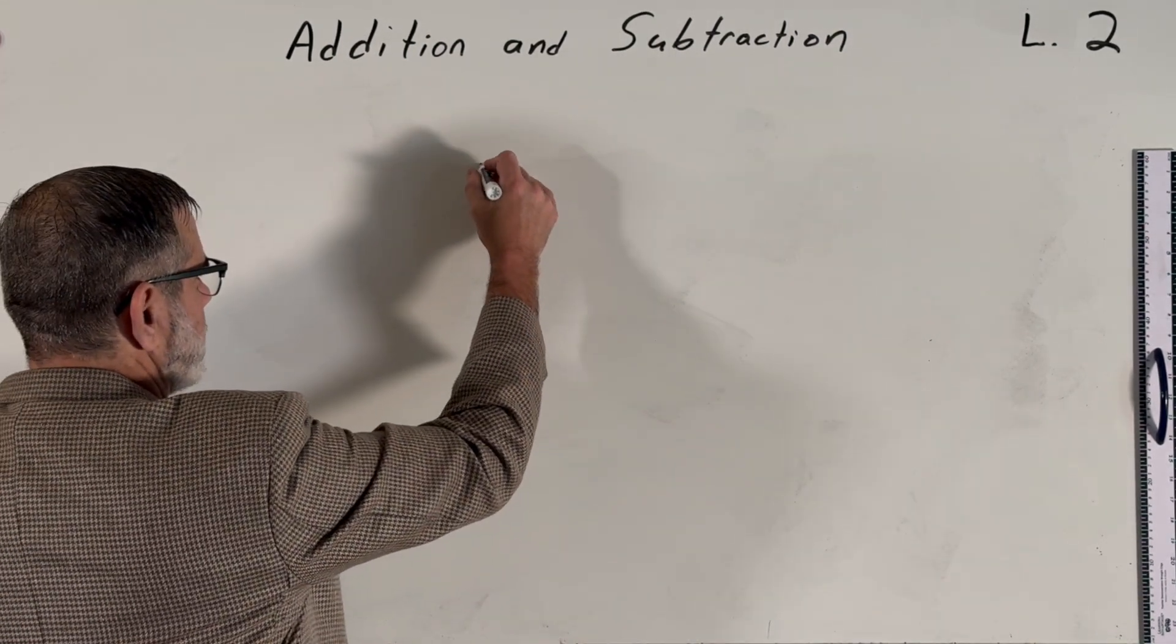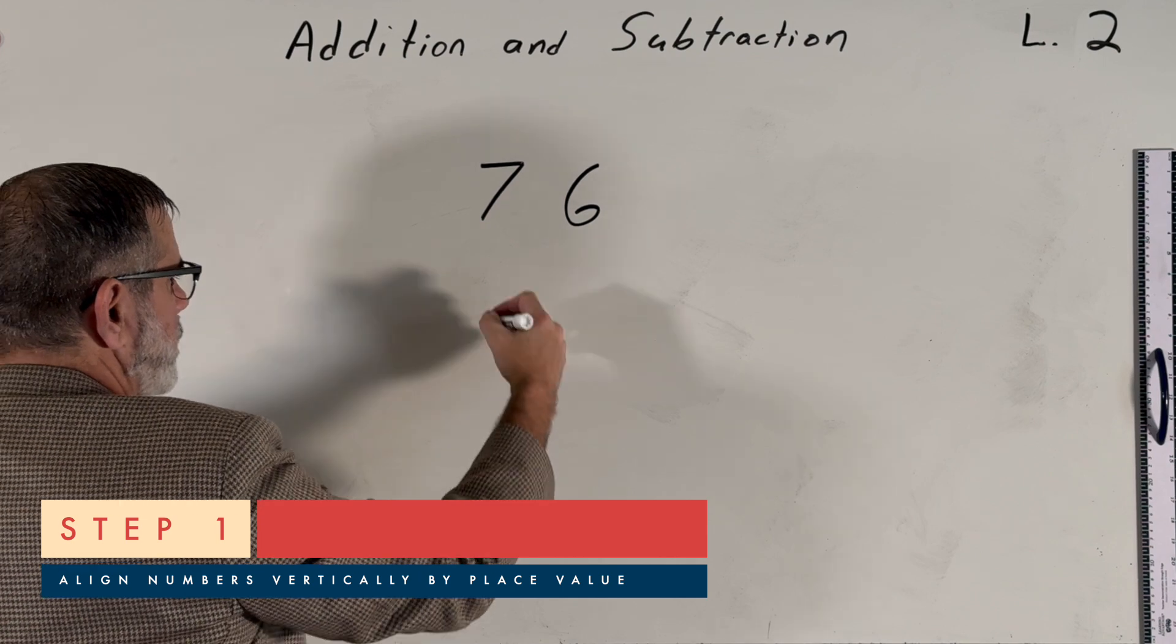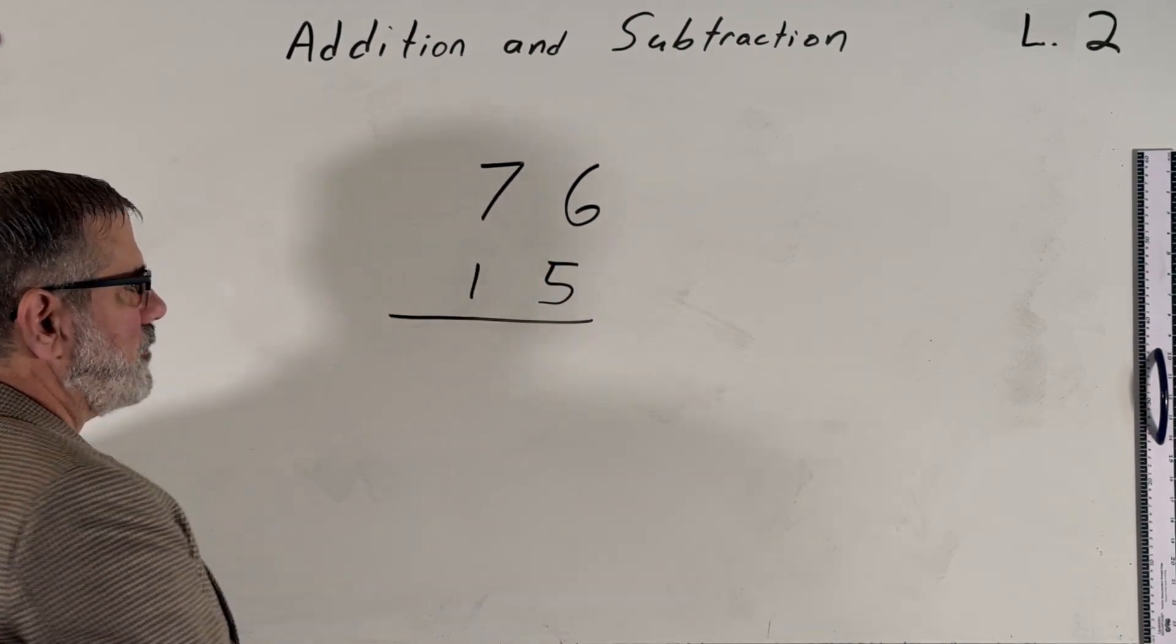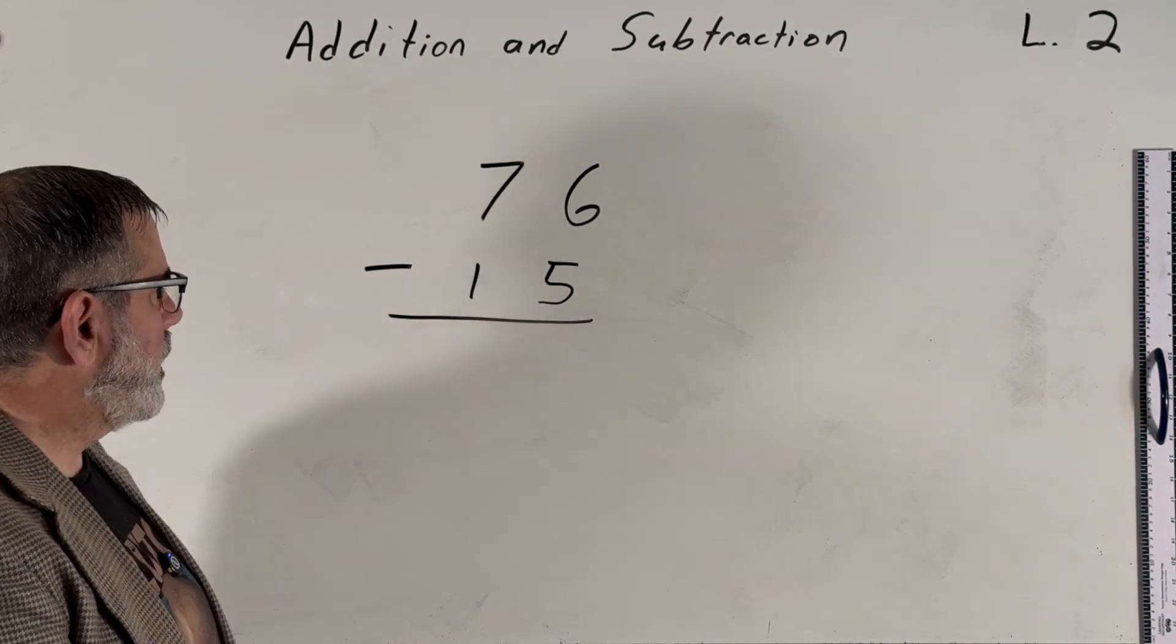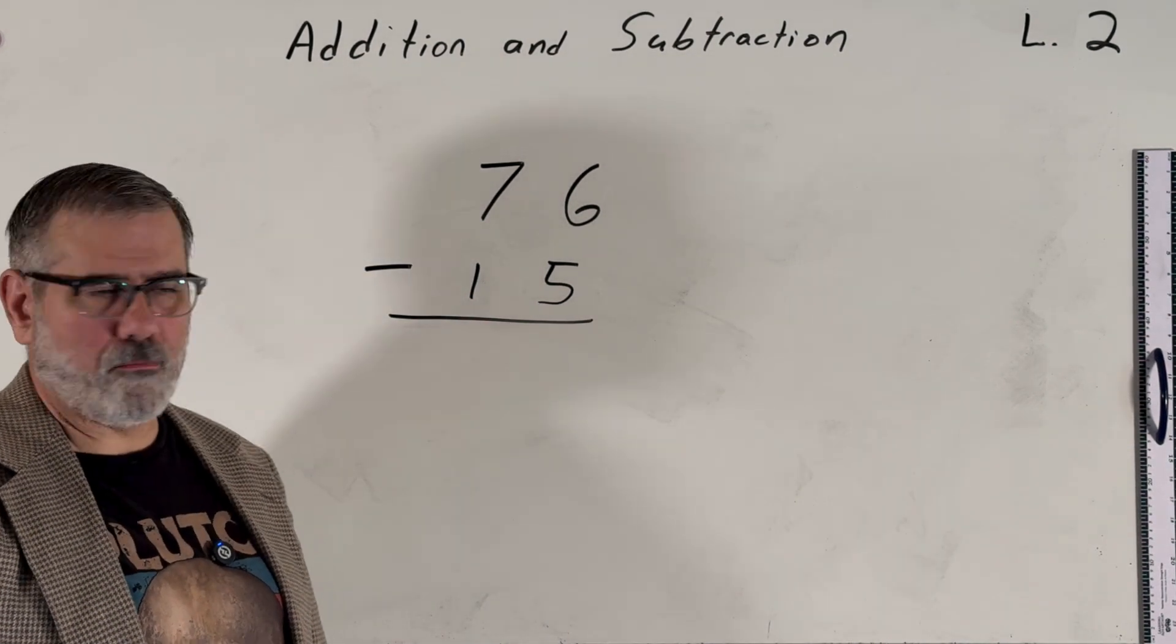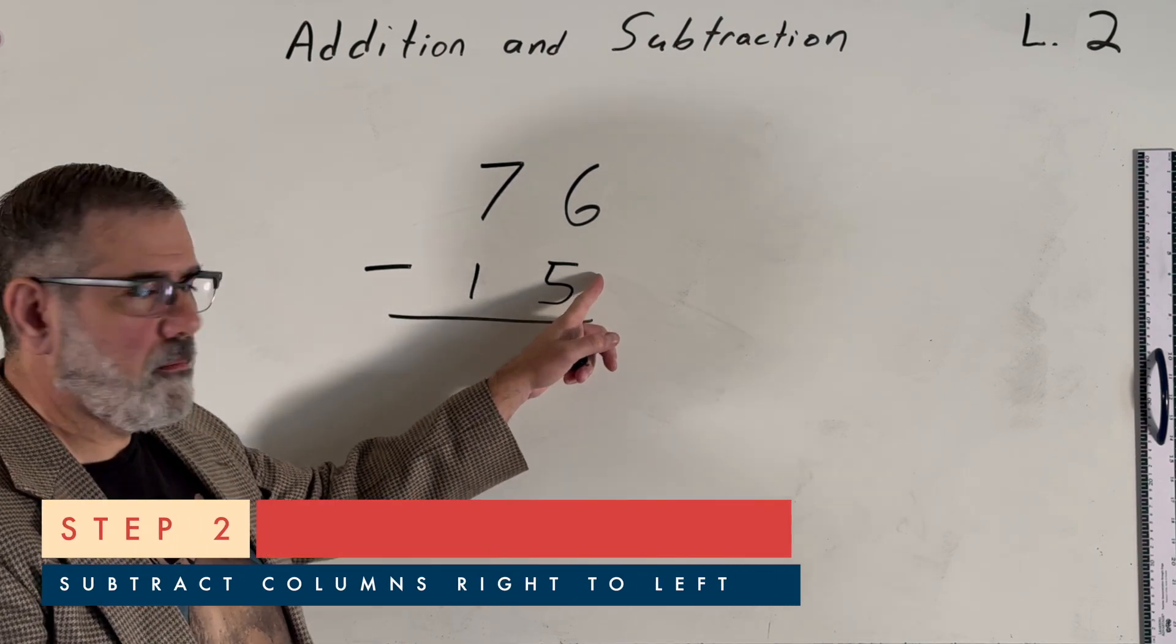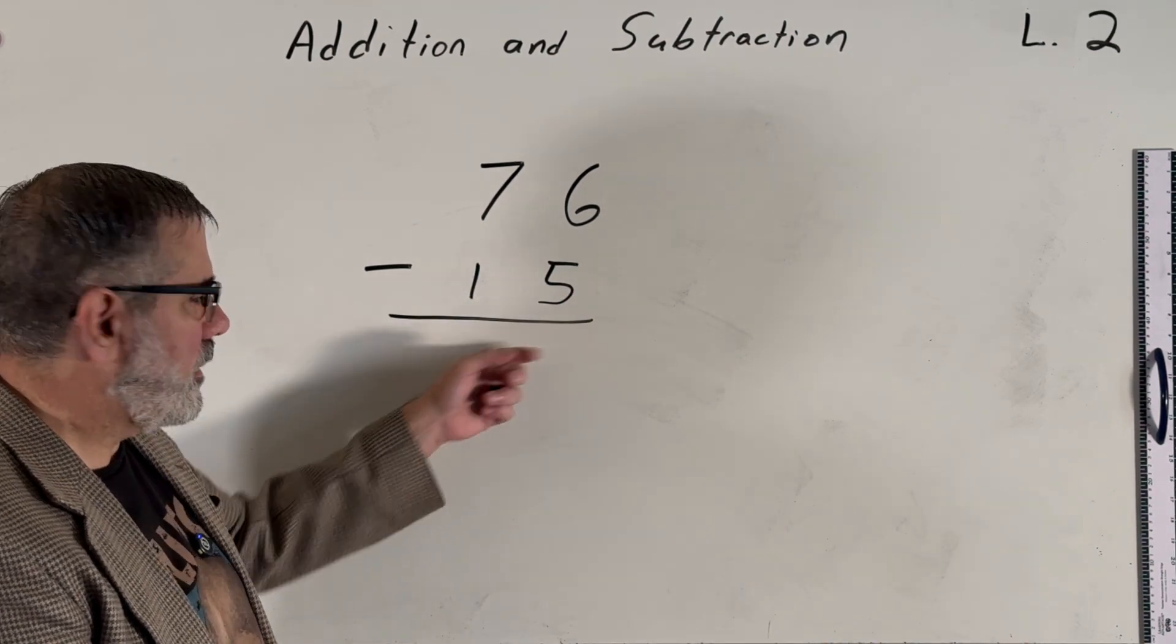So let's write the numbers like this. Align them vertically by their place value just like before, but make sure that you get the order right, because this would be different than 15 minus 76. This time we'll put a minus sign over here to signify that we're doing a subtraction problem. And like before, when we did addition, we're going to start on the rightmost column and we're going to work column by column until we're done. And our answer will accumulate down here in the answer section.